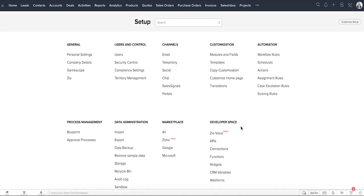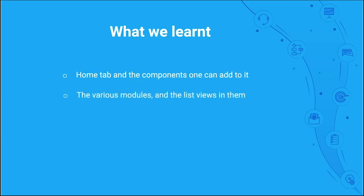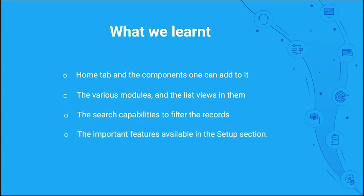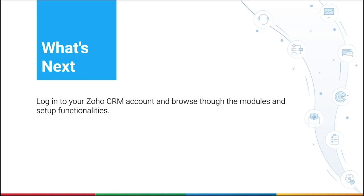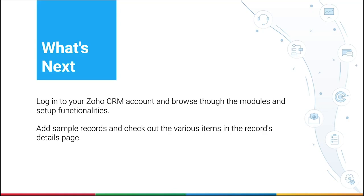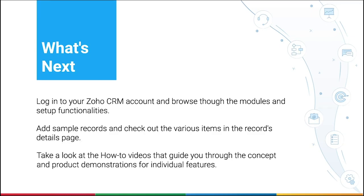That's all in setup. Now let's recap what we learned about in this video. We learned about the home tab and the components we can add to it, the various modules and the list views in them, search capabilities to filter records, and the important features available in the setup section. As a next step, we encourage you to log into your Zoho CRM account and browse through the modules and setup functionalities. We also recommend that you add sample records and check out the various items in the records details page. To learn more about the features in setup, take a look at the how-to videos that guide you through the concept and product demonstrations for individual features.